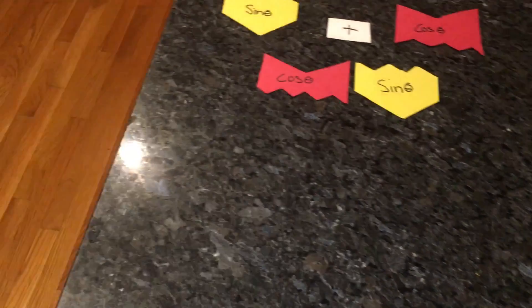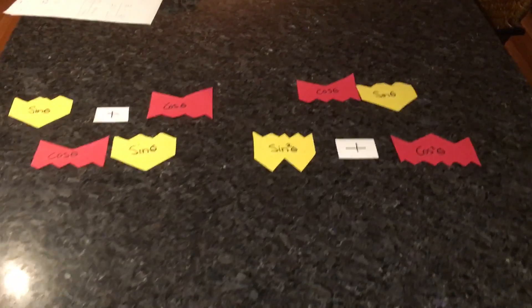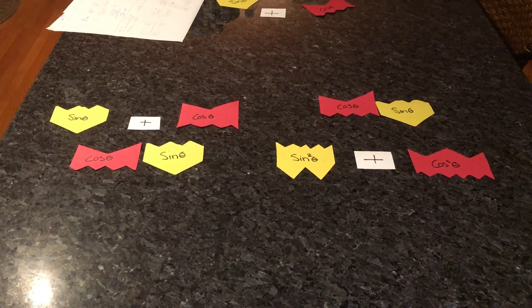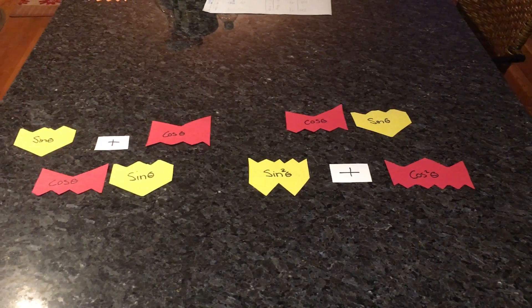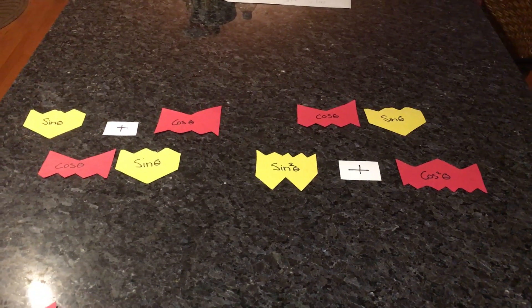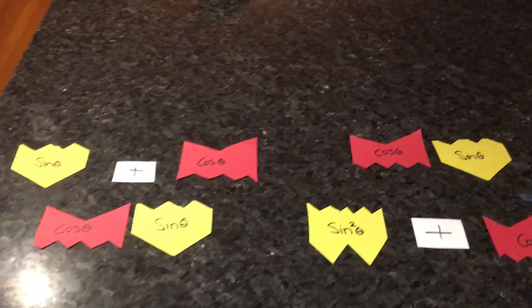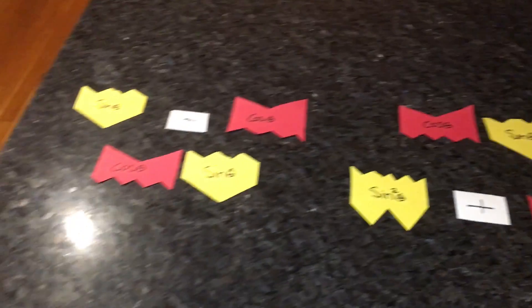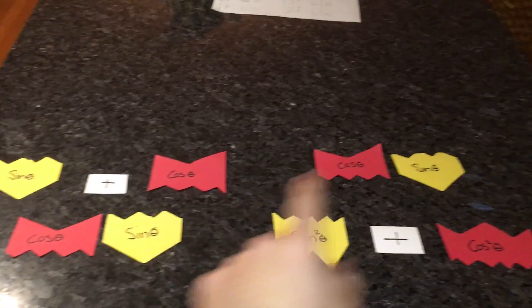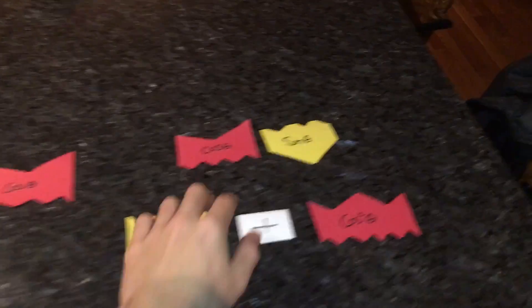Now, we can get rid of that, creating this. Now, we can start canceling out to make it easier to solve. Start with cosine sine and cosine sine up here. They can cancel off, so we'll just get rid of those.